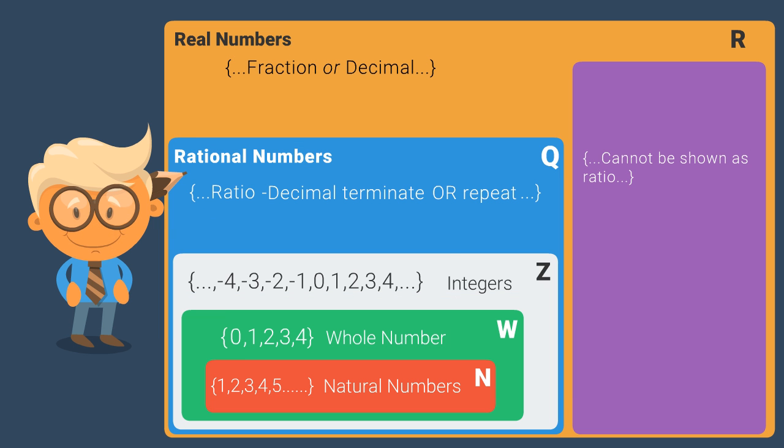So, numbers that cannot be represented as a ratio of integers, and whose decimals do not terminate, nor show any repeating pattern are called irrational numbers. Both rational and irrational numbers form real numbers, as you can see here.